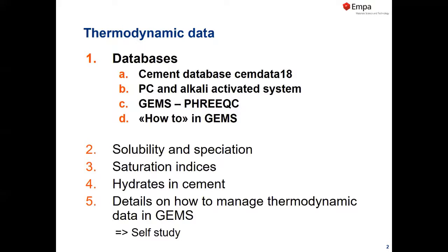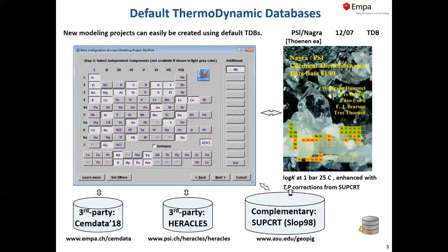Chapter five will be mainly self-study — if you have any questions, do not hesitate to ask. On a very general level, we always have two or three or more databases present in GEMS. We use the PSI-NAGRA-TDB as a general database, and on top of it we normally use the CEMDATA database. PSI is a research institute in Switzerland specializing in thermodynamic modeling, rad waste, and similar things.